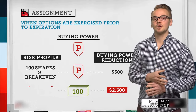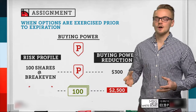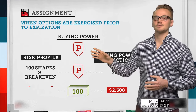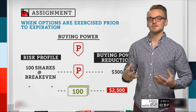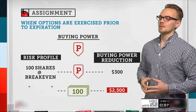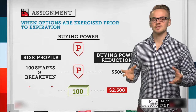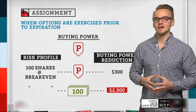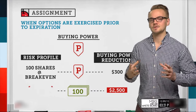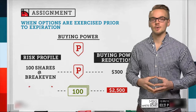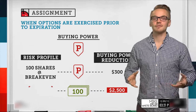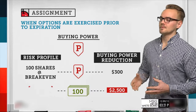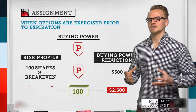My risk profile is 100 shares at my break-even price — I received a credit when selling, so that credit offsets the max loss. Now, if the stock dips below my strike price, that put goes in the money. If the option owner exercises early, I get assigned and become long 100 shares. The risk profile doesn't change, but now that I'm long shares instead of short an option, my buying power reduction increases — in this example from $300 up to about $2,500, roughly a 2-to-1 margin ratio on stock.